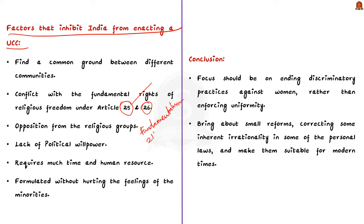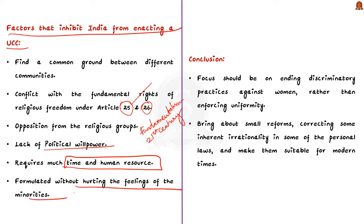Fourth, there is a lack of political willpower. The government must have the will to face the consequences of abolishing personal laws of major religions and convince people of the justice and reform intended. Finally, formulating a UCC requires much time and human resources and must be done without hurting the feelings of minorities. There is a false perception that the UCC is an imposition of Hindu courts and procedures, and this misconception makes a rational debate on its implementation quite difficult.